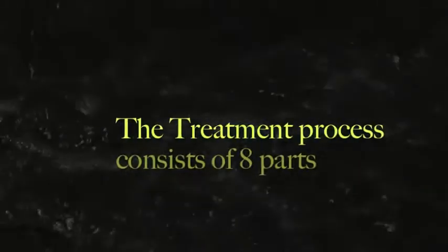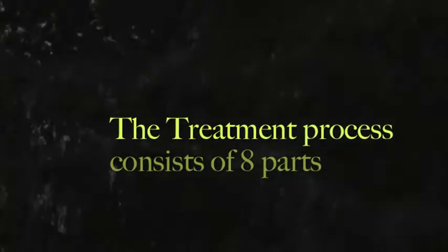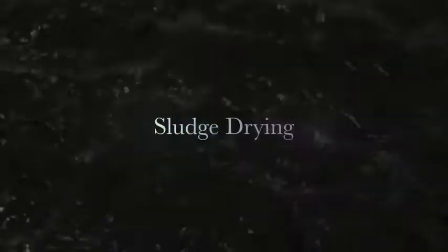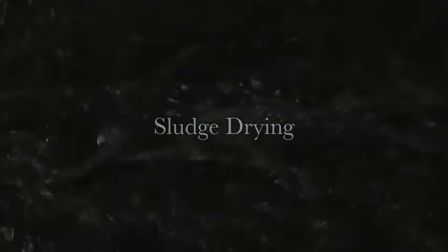The treatment process consists of eight parts: screening, grit removal, primary clarification, the aerobic process, secondary clarification, sludge thickening, sludge digesting, and finally sludge drying.